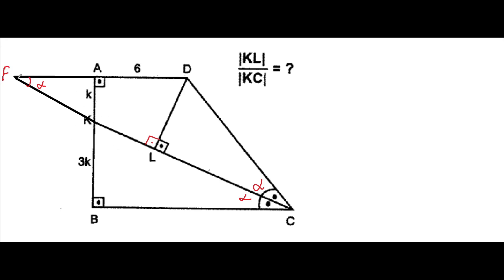So here, we can see that FKA and BKC are similar triangles. Which means that if FK will be X, then KC will be 3X. Because the ratio of AK to KB is equal to 1 over 3.